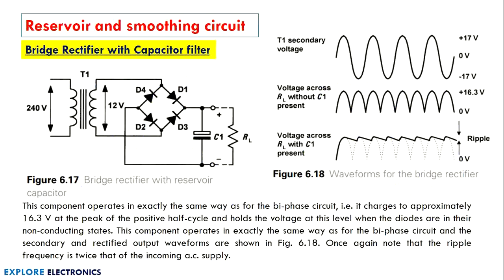To connect a capacitor filter or reservoir circuit to the bridge circuit, we connect a capacitor across the load resistor. Without the capacitor, the output has more AC component and ripples. After connecting the capacitor, it charges to the maximum value, retains its value, and charges again when the next peak arrives — reducing the amount of ripple at the output of the rectifier.